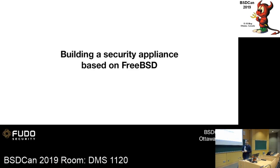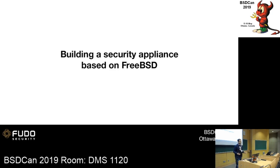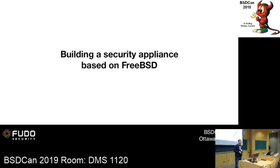We will start with data encryption, which is one of the most important things. We want to encrypt our data so that if somebody takes our disks from the appliance, they cannot access the data without authorization. In FreeBSD we effectively have two different encryption methods, because native ZFS encryption is still not fully available and has downsides — not everything is encrypted with ZFS. Some metadata of the dataset is not encrypted, and we want to encrypt everything.